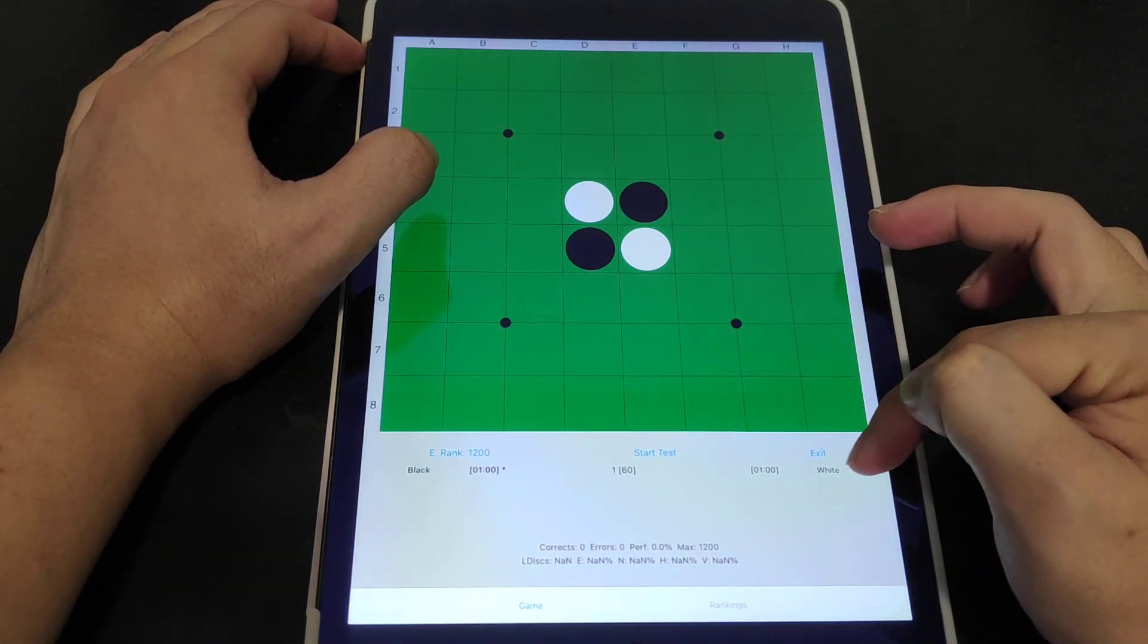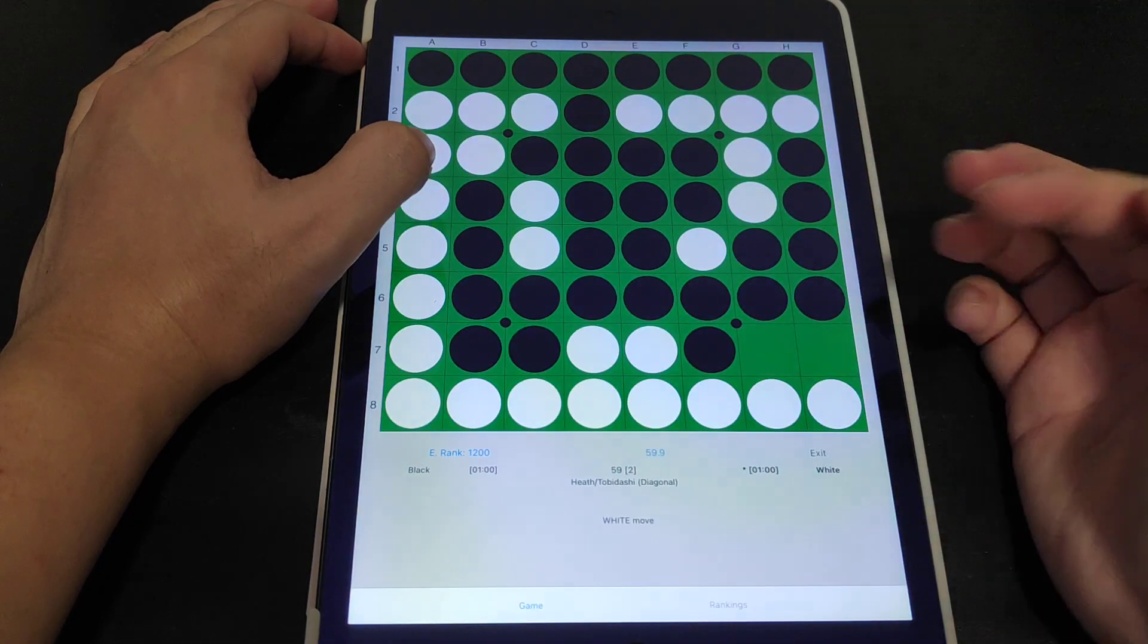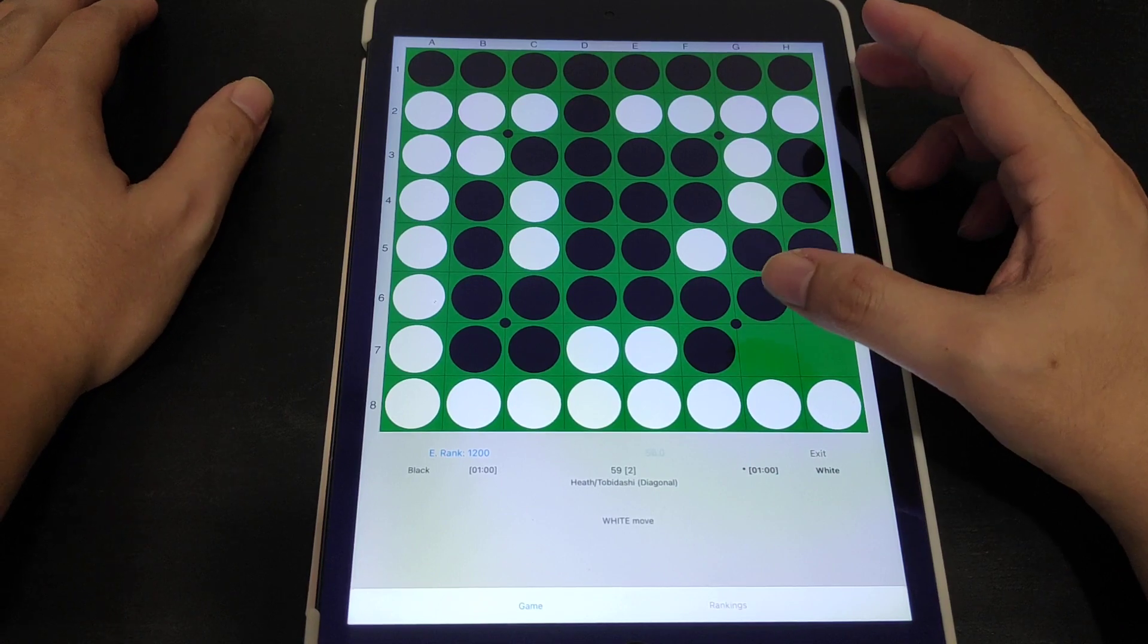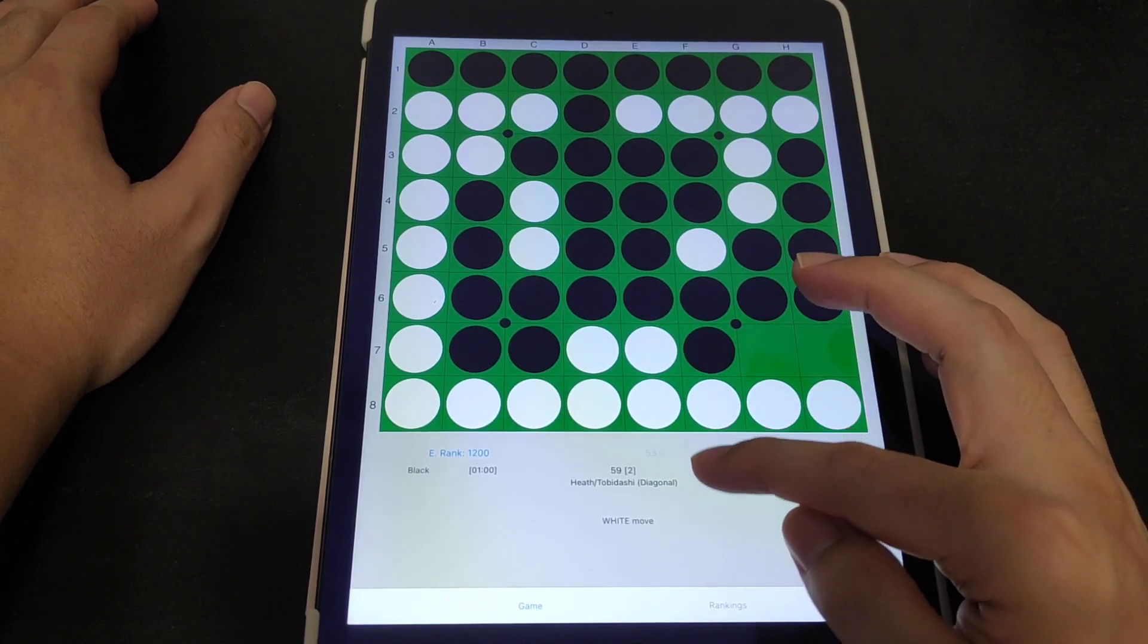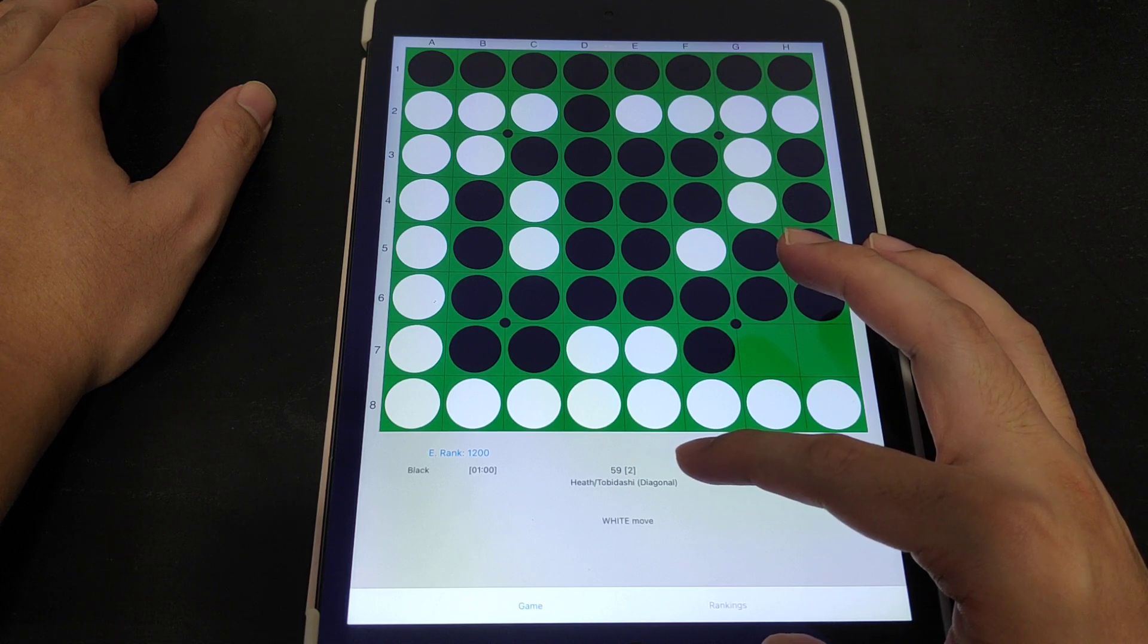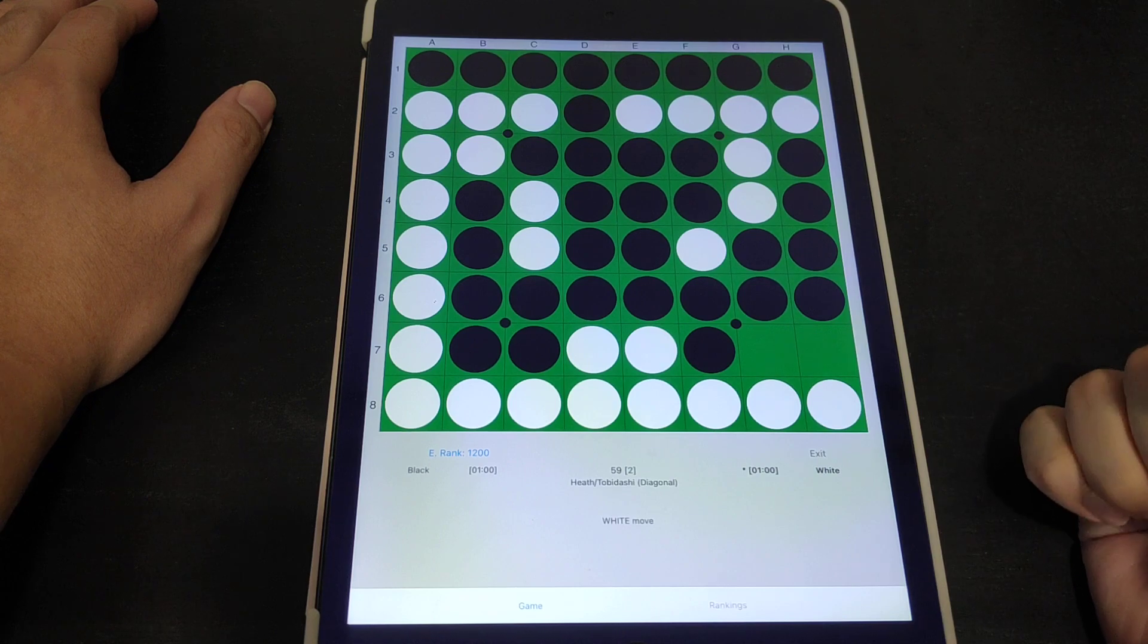If you click on Start Test, they would immediately give you a puzzle which is an end game puzzle. This is just two empty so obviously it's fairly simple to count out. You can see this timer that is counting down and blinking and flashing.